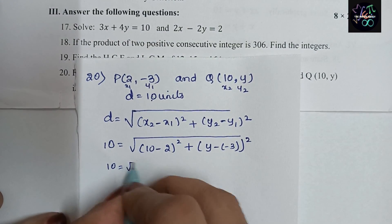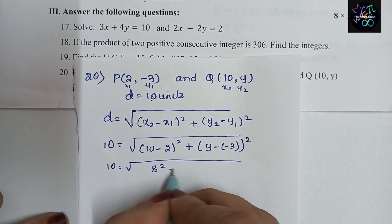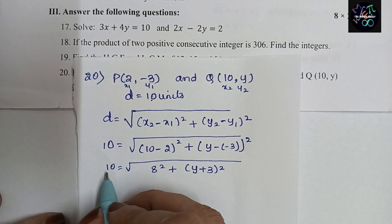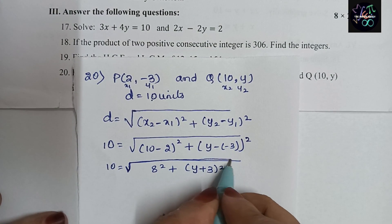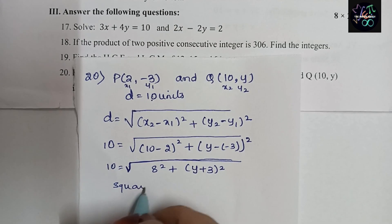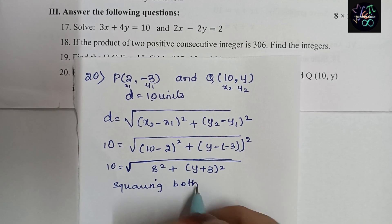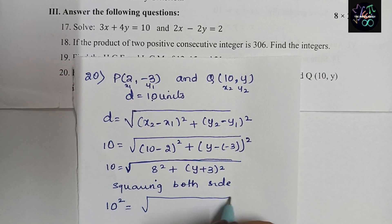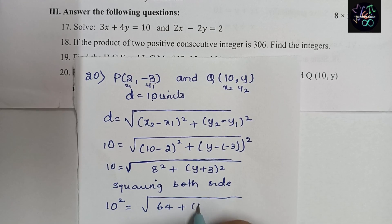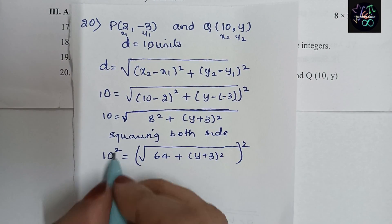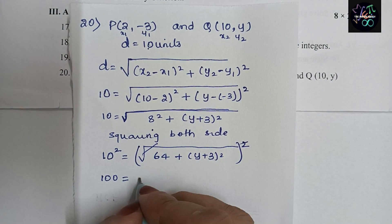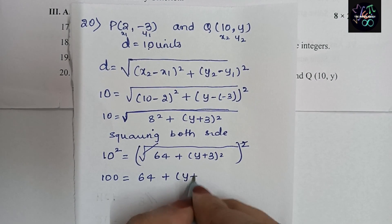This gives: 10 = √[8² + (y + 3)²] = √[64 + (y + 3)²]. To remove the square root, we square both sides: 10² = 64 + (y + 3)², so 100 = 64 + (y + 3)².